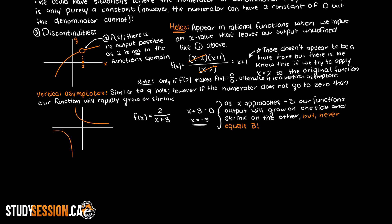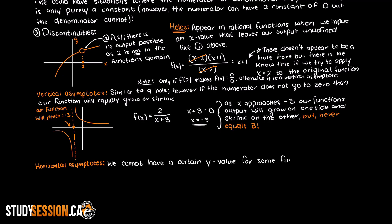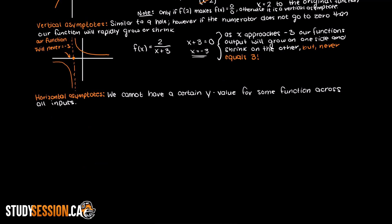The last thing we need to watch out for is horizontal asymptotes. In vertical asymptotes, these are areas where we don't have a y value for a specific x value. Alternatively, a horizontal asymptote is where our function cannot have a specific y value as an output across any input value.